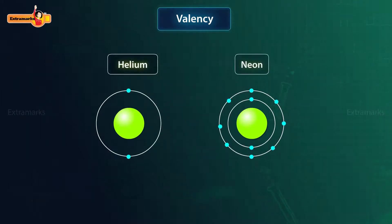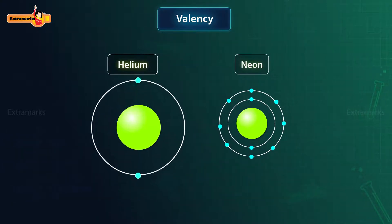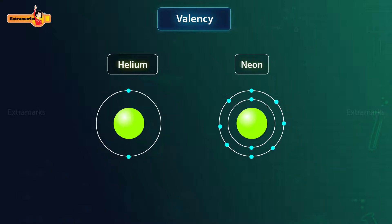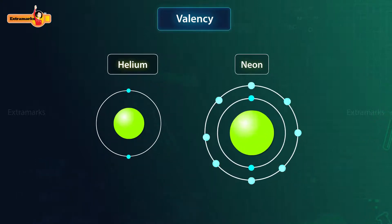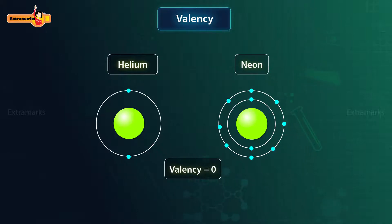The elements with a completely filled outermost shell are stable. For example, helium and neon — where helium has two electrons in its outermost shell and neon has eight electrons in its outermost shell — do not combine with any other atoms. Thus, they have zero combining capacity and therefore the valency of such elements is zero.